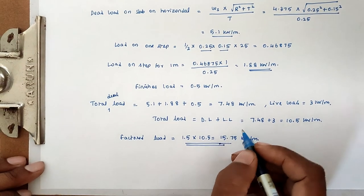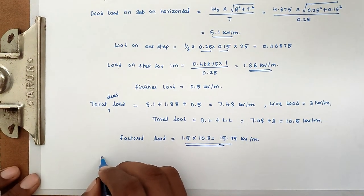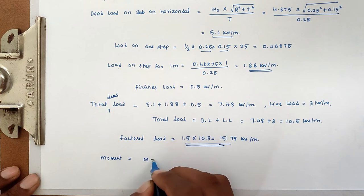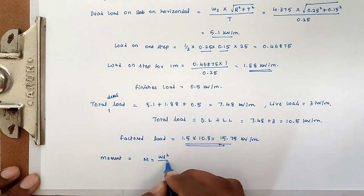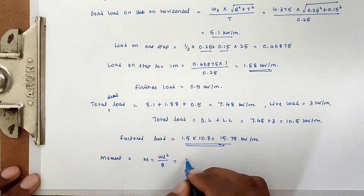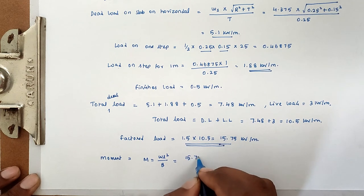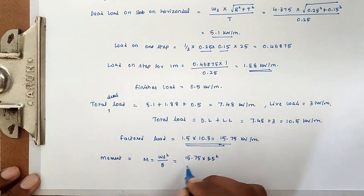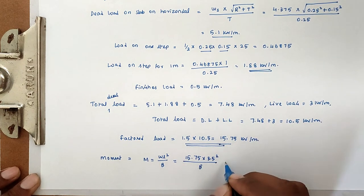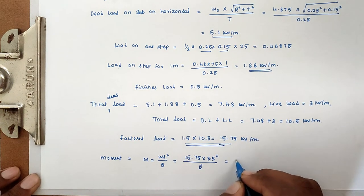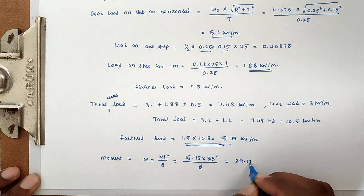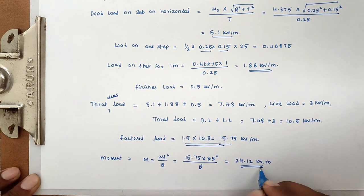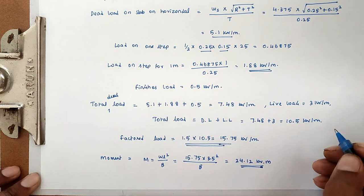The bending moment M = WL²/8. Substituting W = 15.75 kN/m and L = 3.5 m: M = 15.75 × 3.5² / 8 = 24.12 kNm. This is the moment we have to design for.